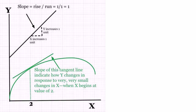To conclude, we're very interested in the slope of tangent lines to a function because that slope tells us how y changes when x changes by a very, very small amount.